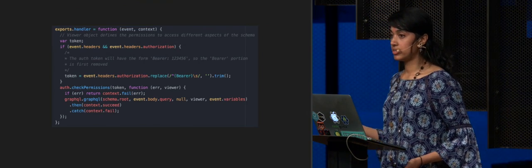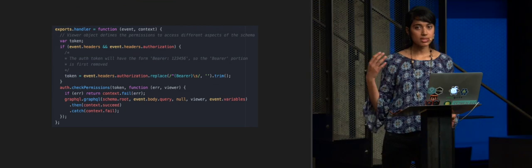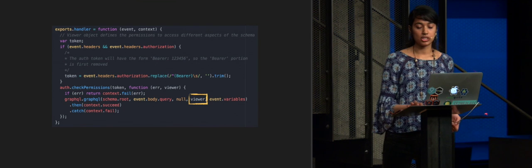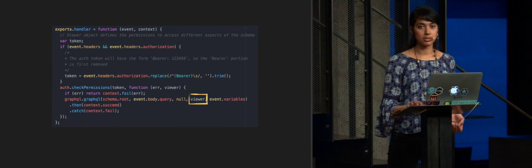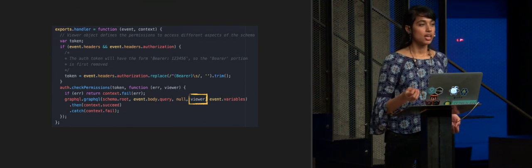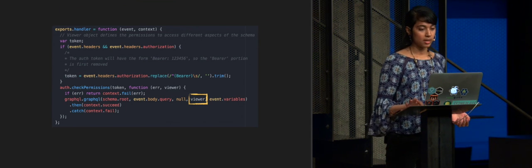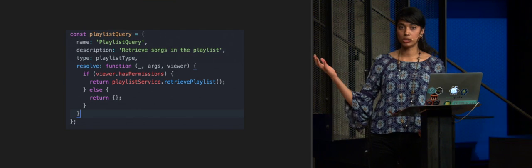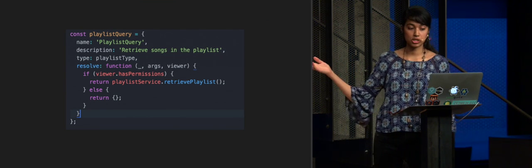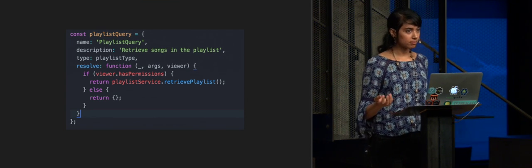On authentication: if you're building a REST API, you want to make sure that users can only access things they are allowed to access. With GraphQL, this becomes really easy with the addition of this viewer parameter. The viewer is accessible in all of the GraphQL resolve functions — so you can pass in, for example, an authentication token from Auth0. Inside your resolve function, you have access to this viewer object, and then you can check whether this viewer has permission to retrieve that playlist. So you can very easily add authentication to a GraphQL API.